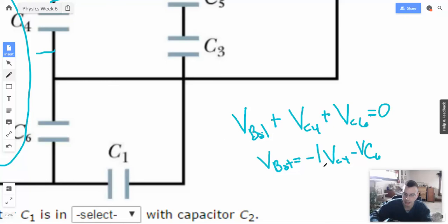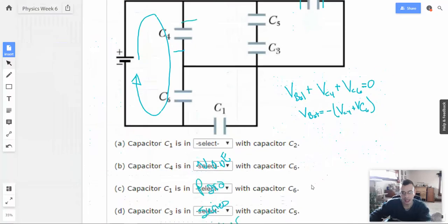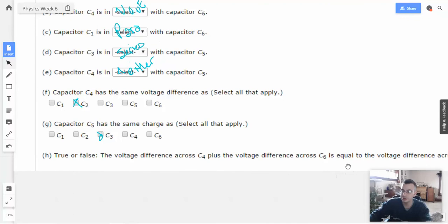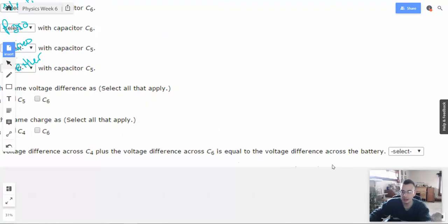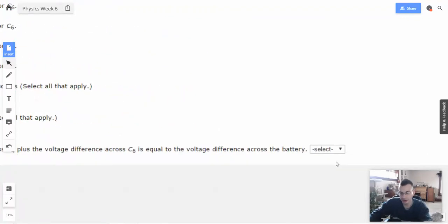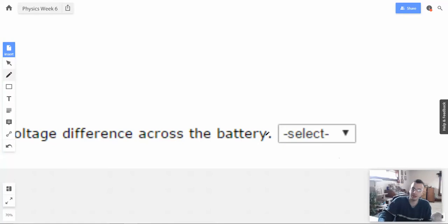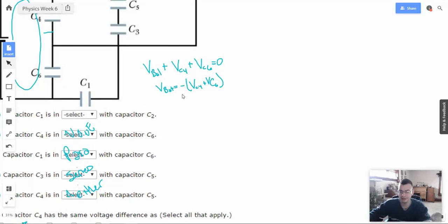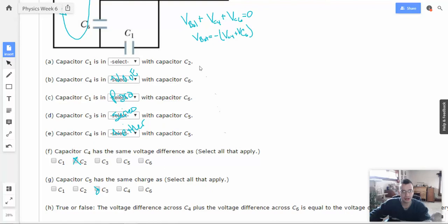I'm going to say that, yes, it's true, the voltage difference across C4 plus the voltage difference across C6 is equal to the voltage difference across the battery, but really it's the negative of it. If they're talking about the magnitude, maybe it's a trick question. I would say true. Maybe they're trying to get at something, make sure you know that it's supposed to be negative.